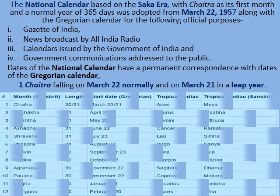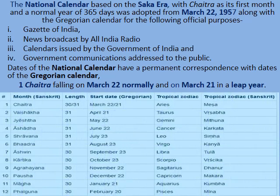The national calendar, based on the Saka era with Chaitra as its first month and a normal year of 365 days, was adopted from March 22, 1957, along with the Gregorian calendar for official purposes — for publishing the Gazette of India, news broadcasts on All India Radio, calendars issued by the government, and communications and addresses to the public.